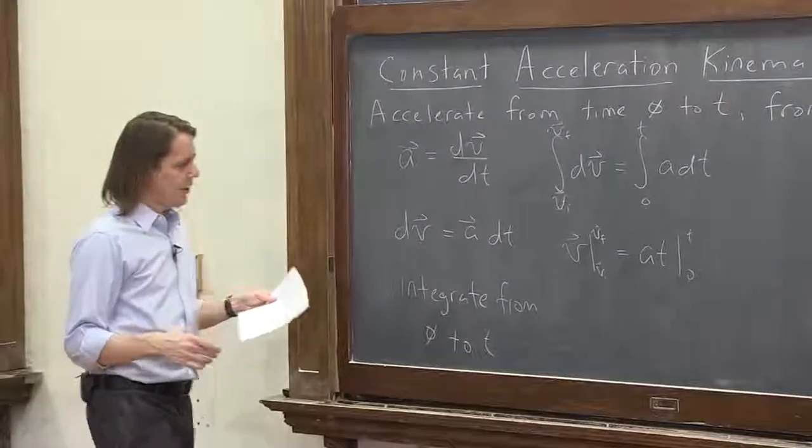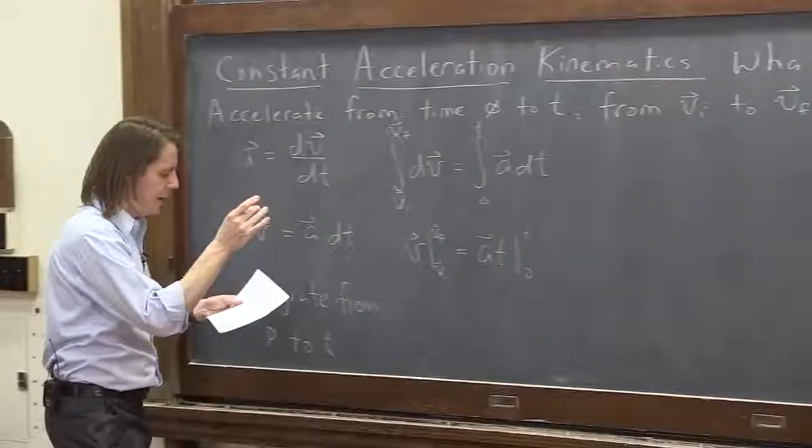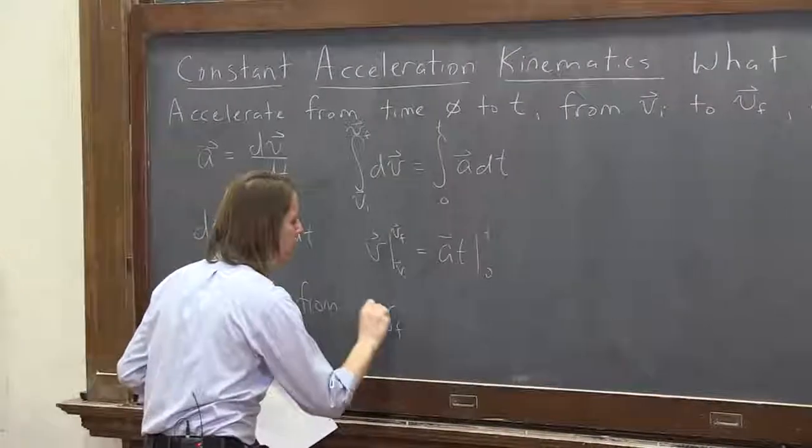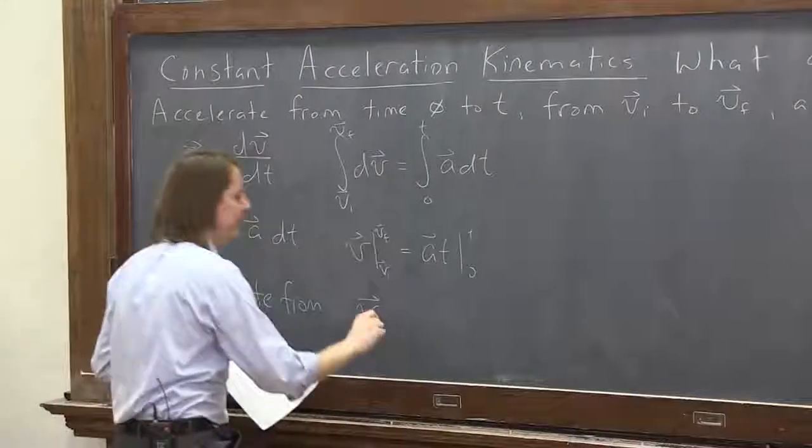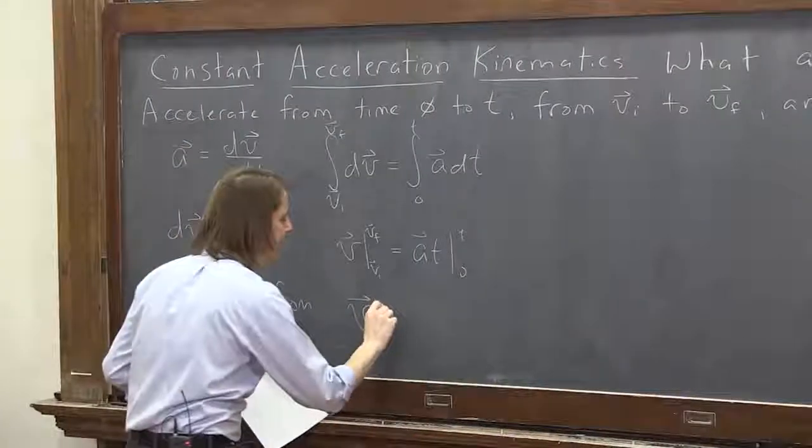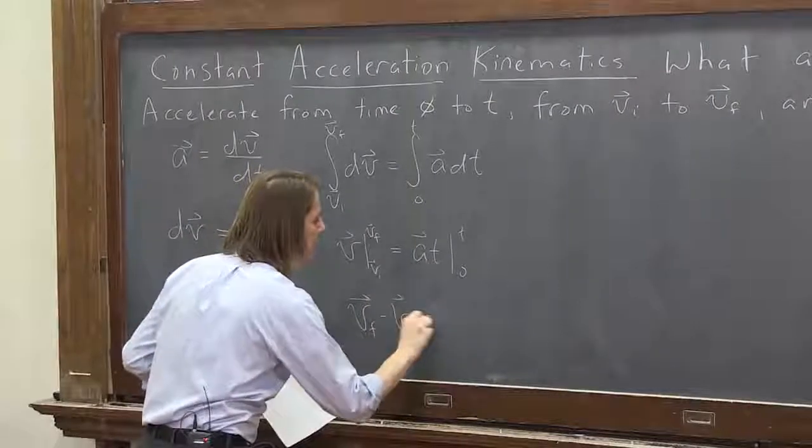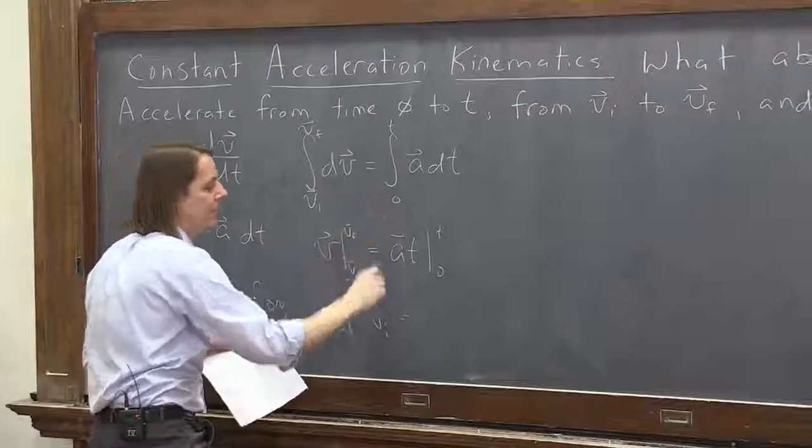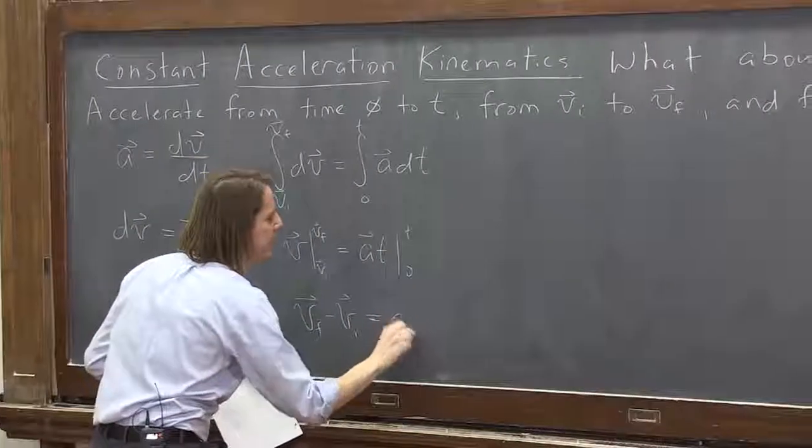And then what do we got to do? We just got to apply the bounds, and you'd get vf minus vi. So plug in vf for v is vf minus plug in vi for v, vi, equals at. Plug in t, you get at minus plug in 0, you get nothing. So this part is just at.